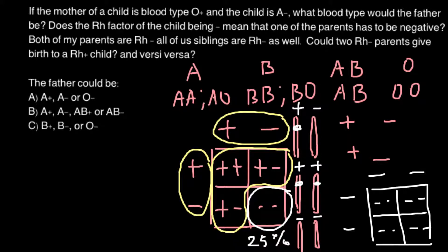We already answered this question. Both parents being Rh negative means all siblings will be Rh negative as well — it is not possible otherwise. And to confirm: two Rh negative parents cannot give birth to an Rh positive child. Vice versa, two Rh positive parents can give rise to progeny who is Rh negative.